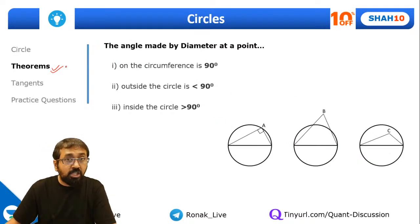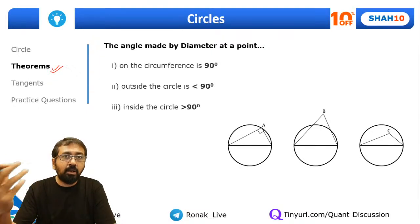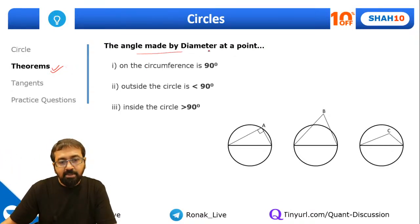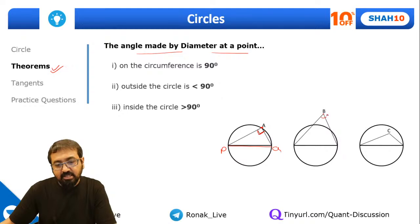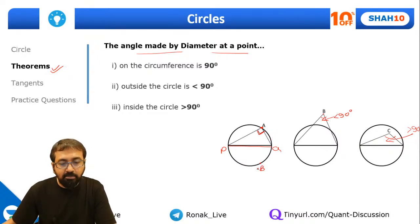Now the theorems begin. The angle made by a diameter at any point on the circumference is always 90 degrees. At any point outside the circle the angle will be less than 90 degrees (acute), and at any point inside the circle it will be more than 90 degrees (obtuse). So the diameter always makes a 90-degree angle at any point on the circumference. If you take a point anywhere on the circumference and connect it to the endpoints of the diameter, that angle will be 90 degrees.